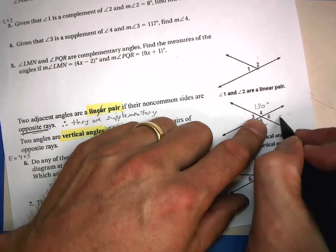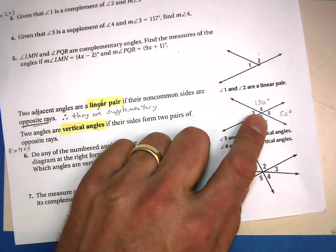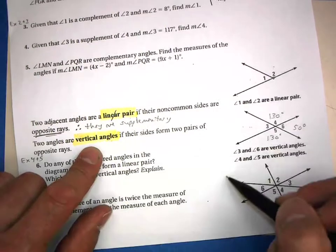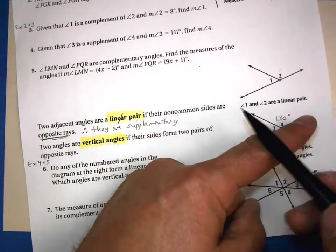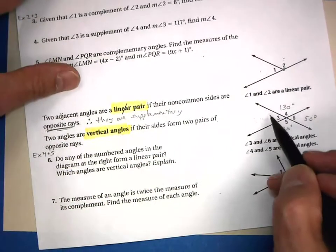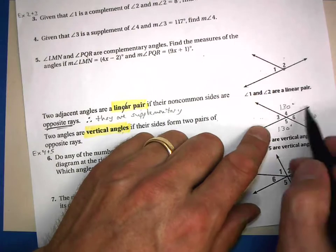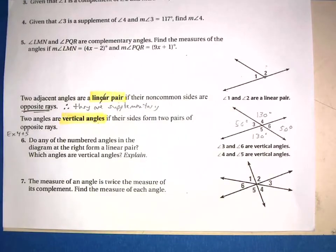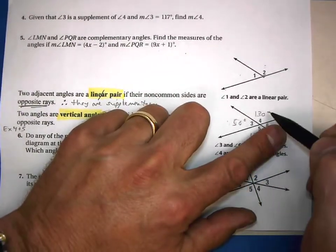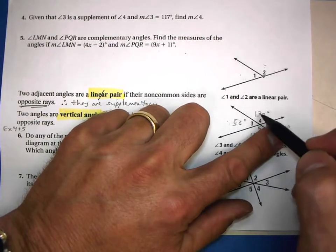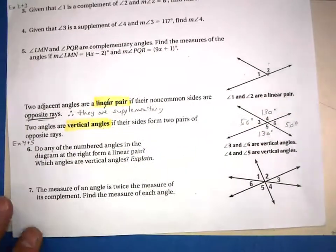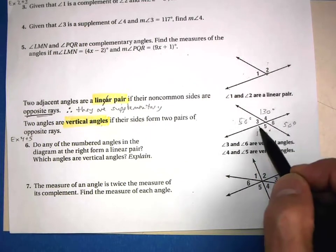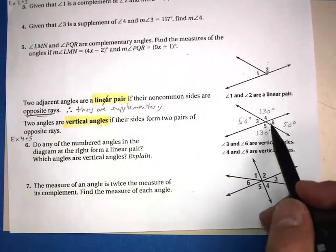The linear pair angles are supplementary, so the angle adjacent to 130 degrees is 50 degrees. Its vertical angle is also 50 degrees. So if you know the measure of one angle formed by two intersecting lines, you can find all three remaining angles — using vertical angles for the opposite one and linear pairs for the adjacent ones.